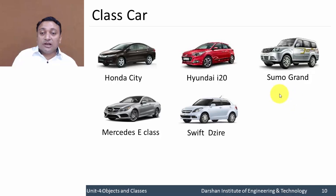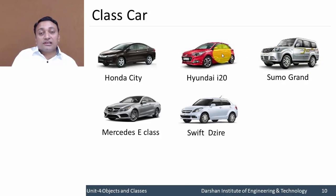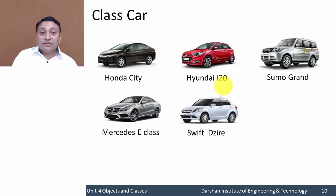So here you can observe that we have similar kinds of objects but with different attribute values. All will have a similar kind of description and methods, but the values will be different. Ultimately we can say that 'car' is a class which describes similar kinds of objects like different cars.